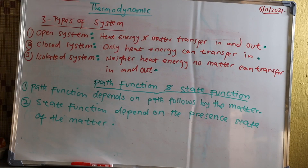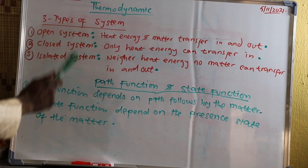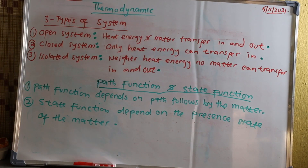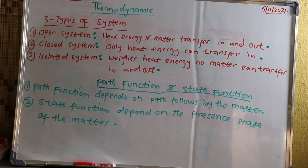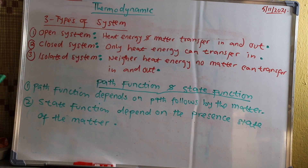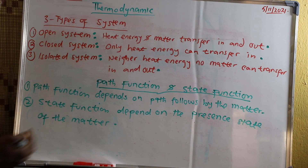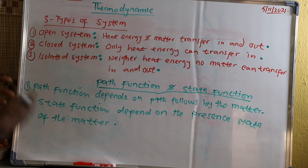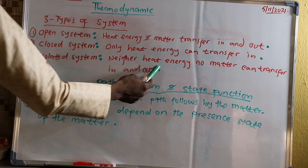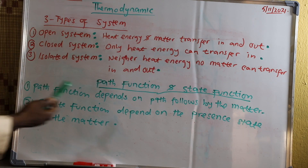Three types of system. We have open system: a system that allows heat energy and matter to transfer in and out of the system. For example, when you take a flask and put tea or coffee inside, it will retain the heat inside but matter cannot transfer out — that would be a closed system. Isolated system: neither heat energy nor matter can transfer in and out of the system. This is just an assumption for the isolated system.